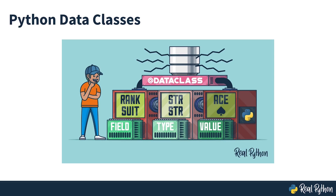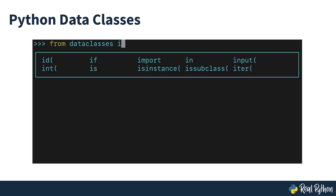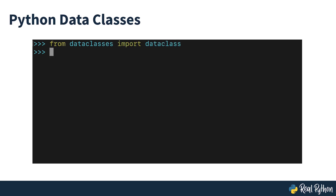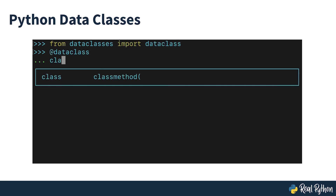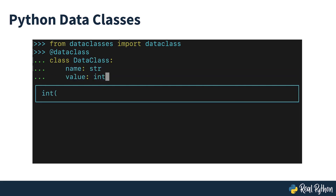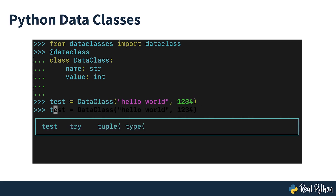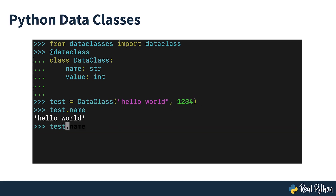Python data classes were introduced with Python 3.7 and they're a class which typically contain mainly data, although there aren't really any restrictions. They provide a convenient way to define classes which exist primarily to store data and allow value retrieval via attribute lookup.